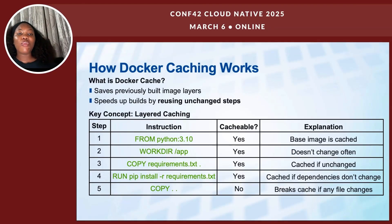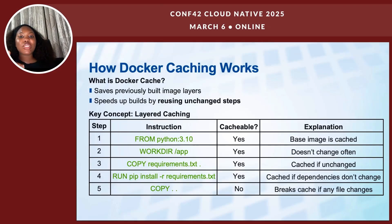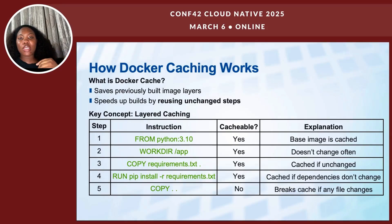Now let's talk about caching, which is one of the most important ways Docker speeds up builds. Docker saves previously built image layers and reuses them on unchanged steps whenever possible. This avoids rebuilding parts of the image that haven't changed, making builds much faster. For example, if you install a dependency in a Dockerfile and it hasn't changed, Docker reuses the previous build layer instead of running the install process again. Each instruction in the Dockerfile creates a layer, and some layers can be cached while others can't.